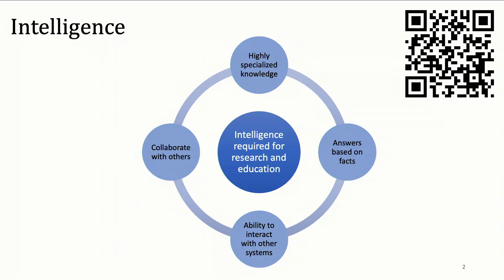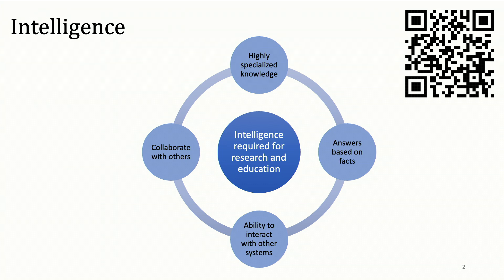When we think about the intelligence that's needed in research and education, we think about having highly specialized knowledge. We think about having answers that are based on facts instead of opinions or just mere conjecture. We think about the ability to interact with other systems, whether that's tools in your lab, code, or searching things on the internet. And we think about collaboration with others — using other humans to augment our answers and provide curated final results.